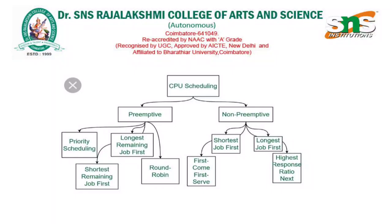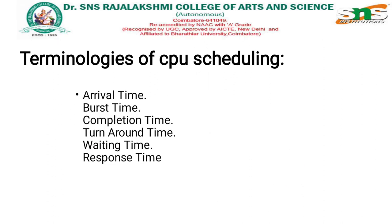This diagram illustrates the types of CPU scheduling: preemptive and non-preemptive. Under preemptive we have a set of algorithms, and under non-preemptive we have a set of algorithms. In both cases we can use the six types of algorithms in order to schedule and utilize the processor in a useful manner.